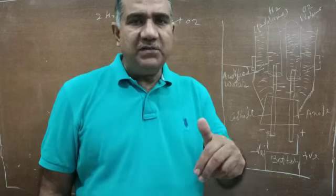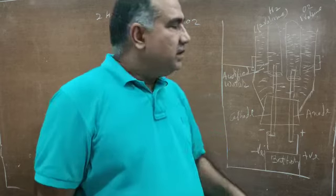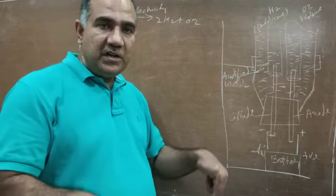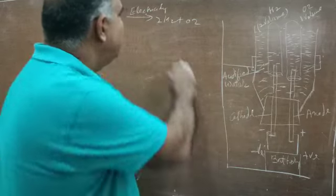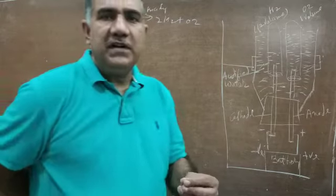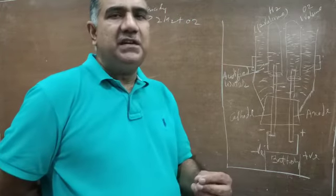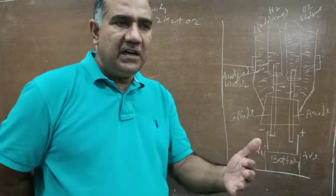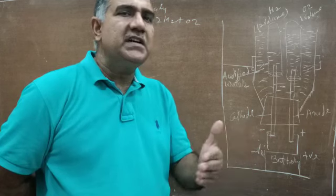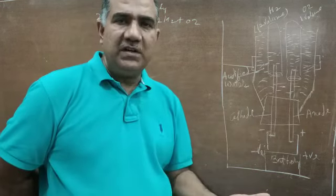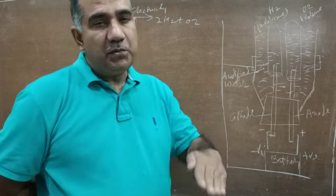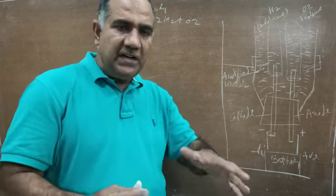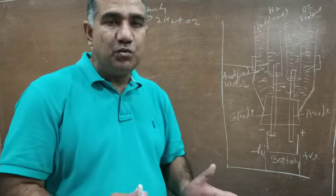The first example we will see is water. When electricity is passed through water, it divides into hydrogen and oxygen. Pure water does not conduct electricity, so you need to add some salt or acid so that it dissociates into ions. Here we have taken acidified water — water with some acid added — so that when dissolved, the acid dissociates into ions, and these ions carry electricity through the water.